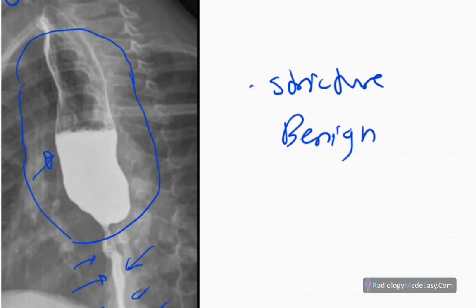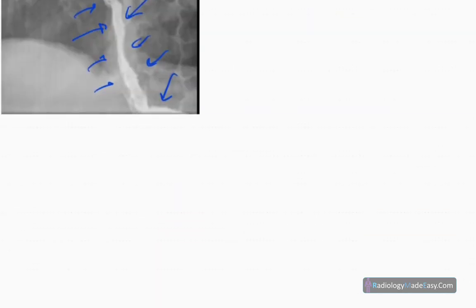And no opacification of lungs to suggest regurgitation. Visualized bones also normal. So it's a benign stricture.